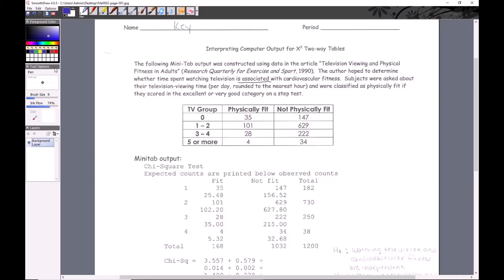Subjects were asked about their television viewing time and were classified as physically fit if they scored in the excellent or very good category on a step test. It won't tell you what kind of chi-square test - you have to figure that out by reading it. Computers can't distinguish between homogeneity and independence. Here's the data as you might enter it - you've got labels going across and down. It looks like four rows and two columns, so this is 4x2, and there's no subtotals or grand total.